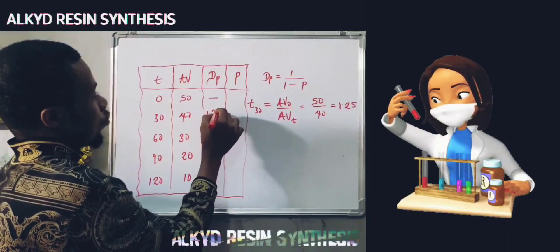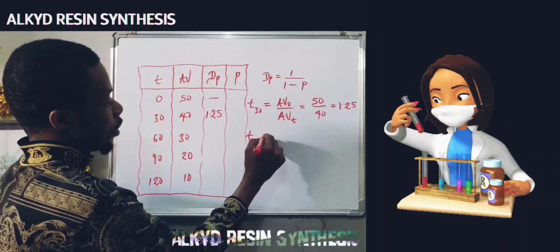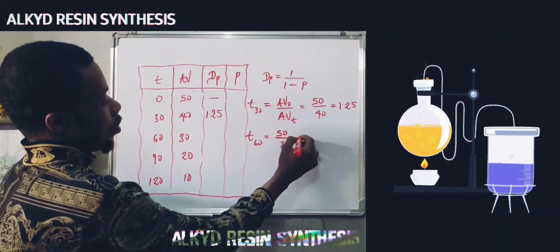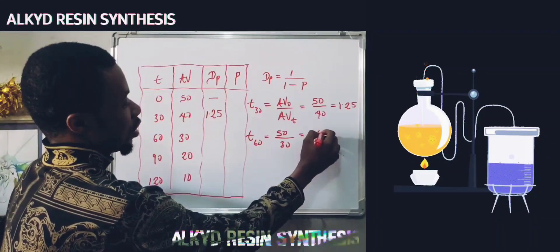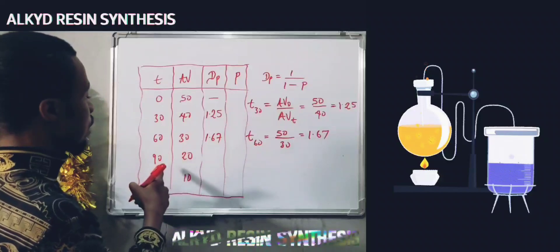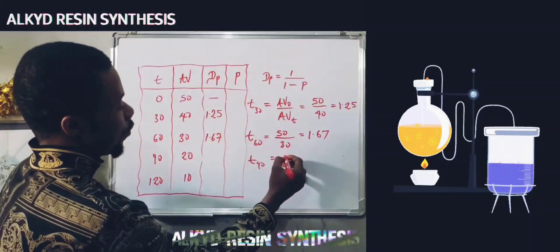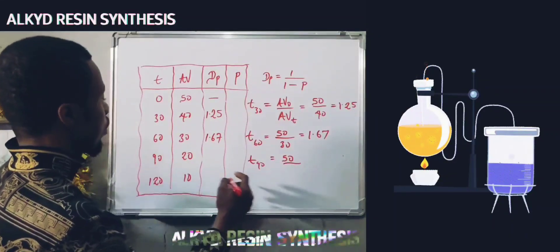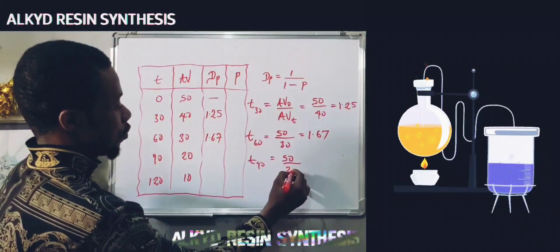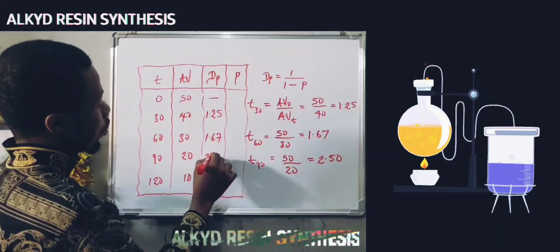At time 60, using the same formula: 50 divided by 30 gives us 1.67. At time 90, we have 50 divided by 20, which gives us 2.50. So the degree of polymerization at 60 minutes is 1.67 and at 90 minutes is 2.50.